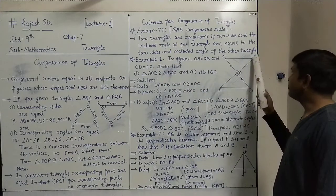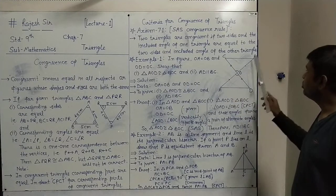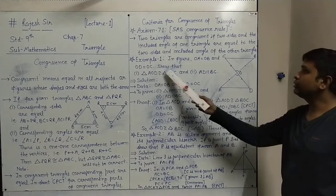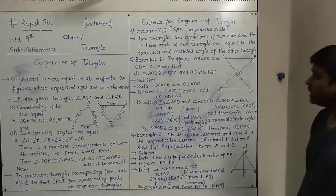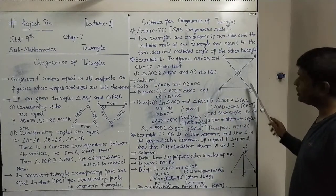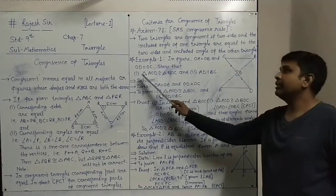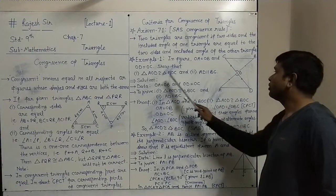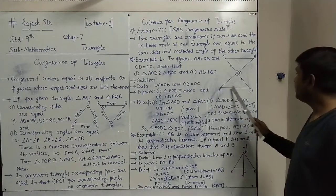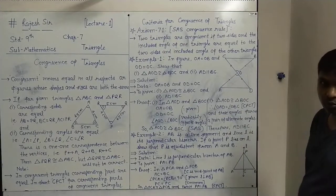We will confirm this with Example 1. In the figure, it is given that OA equals OB and OD equals OC. We have to show two things: first, that triangle AOD is congruent to triangle BOC; and second, that AD is parallel to BC.